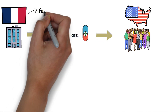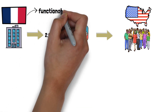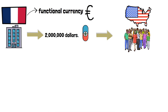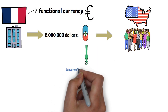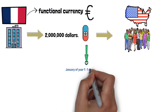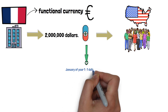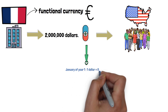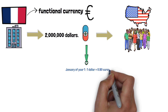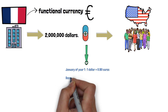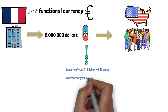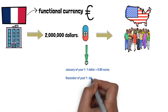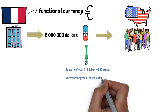The entity's functional currency is the euro. How should the accounting recognition be done taking into account the following exchange rates? In January of year 1, 1 dollar is equal to 0.90 euros. In December of year 1, 1 dollar is equal to 1.2 euros.